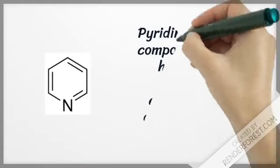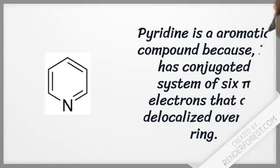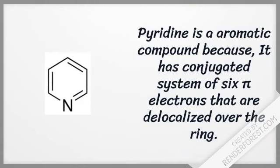Pyridine is an aromatic compound because it has a conjugated system of 6 pi electrons that are delocalized over the ring.